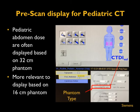Pre-scan display for pediatric CT is shown here. While doing a pediatric CT, the scanner displays dose information; however, pediatric abdomen doses are often displayed based on a 32 centimeter phantom. More relevant would be to display the dose based on a 16 centimeter phantom, and this varies among manufacturers. Anyone trying to understand the dose display must watch for the type of phantom used and correct it accordingly for actual patient dose estimation — this is especially important for facilities undergoing accreditation.